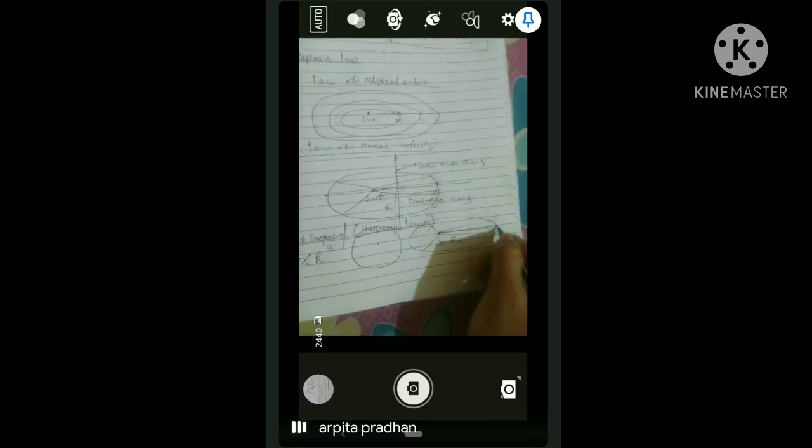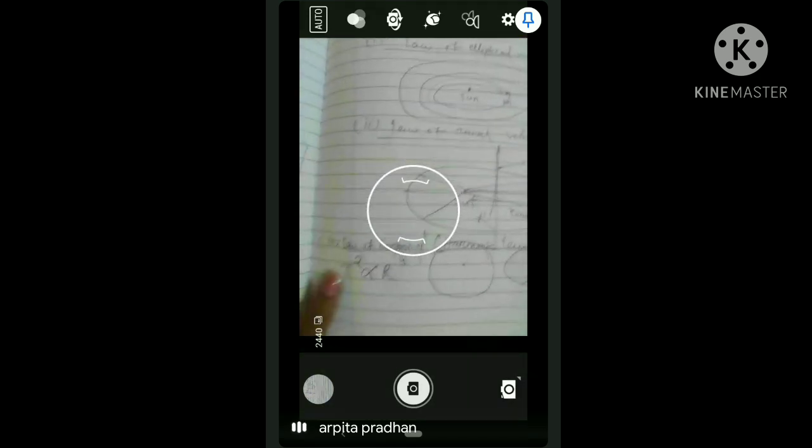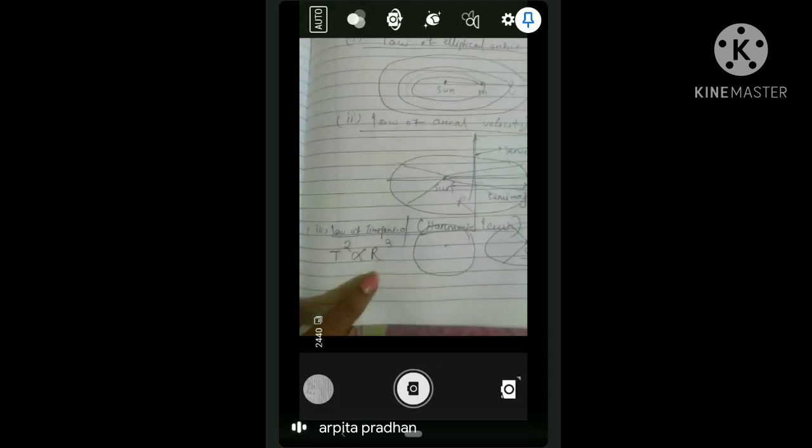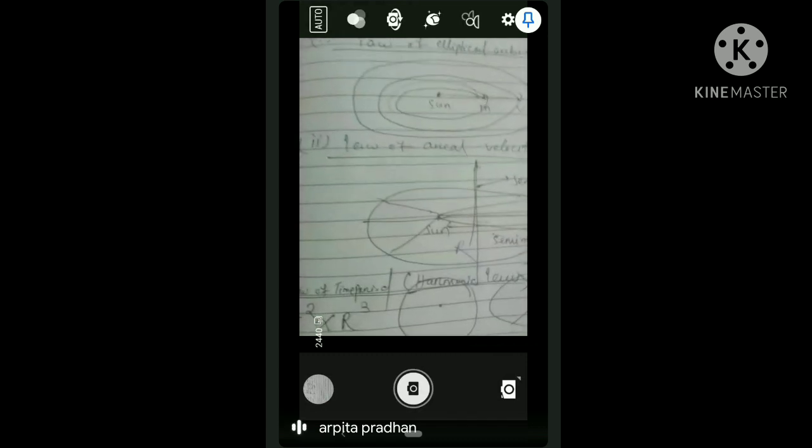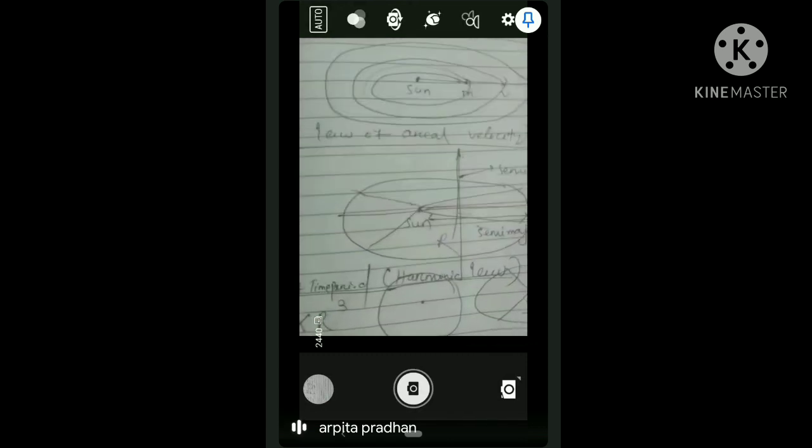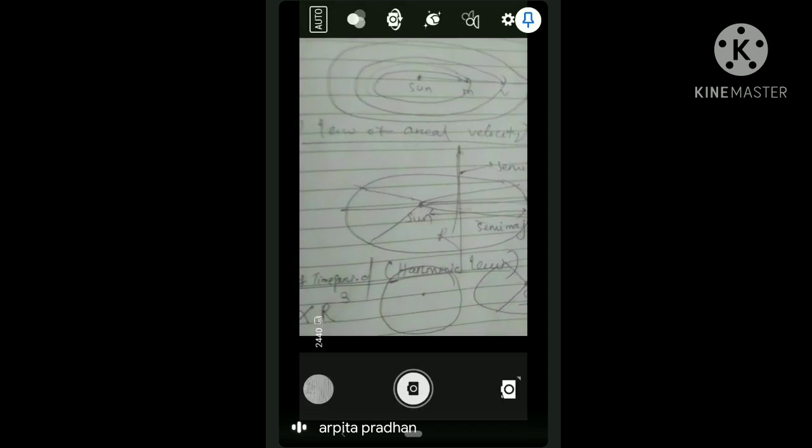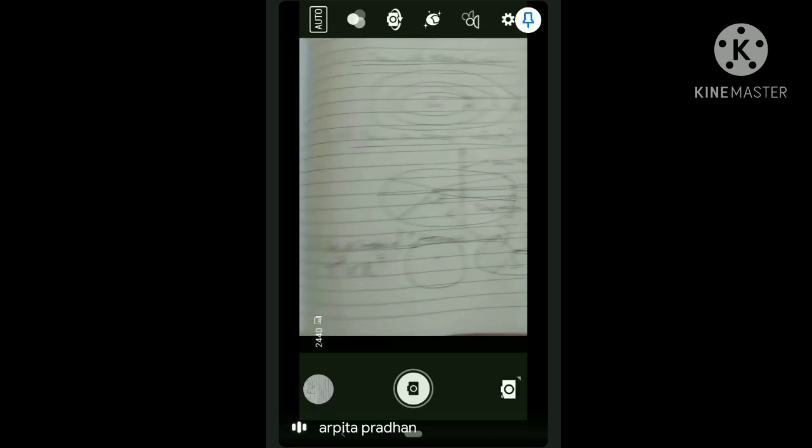It is around the planet - that is the distance. Time period square is directly proportional to the cube of the semi-major axis. For the definition: planet moves around the sun in such a way that square of the time period is directly proportional to the cube of semi-major axis. That means the third law.